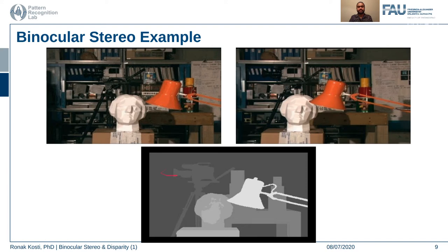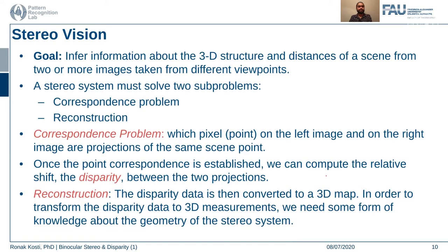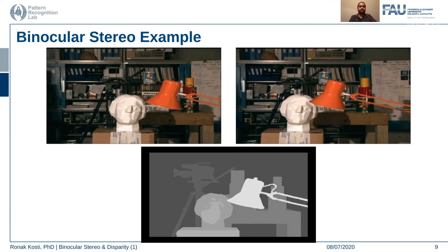So what is stereo vision? The goal is to infer information about the 3D structure of the world and the distance of each point from the camera center, using at least two images taken from different viewpoints. In a stereo system we solve two major problems. The first is the correspondence problem — finding where a point visible in one image can be found in another image. For example, the handle of the lamp or the nose of the head are visible in both images and serve as good correspondences.